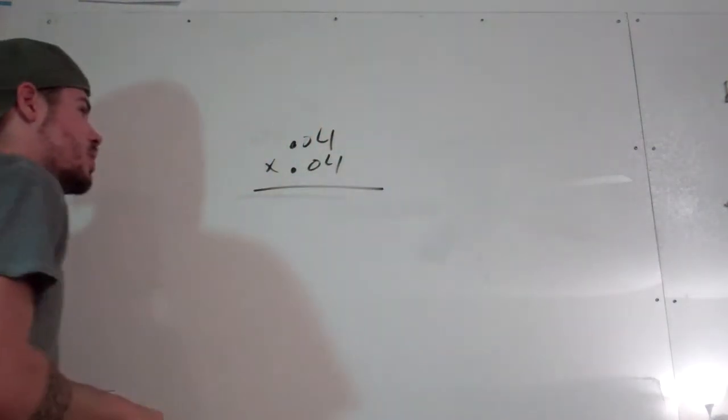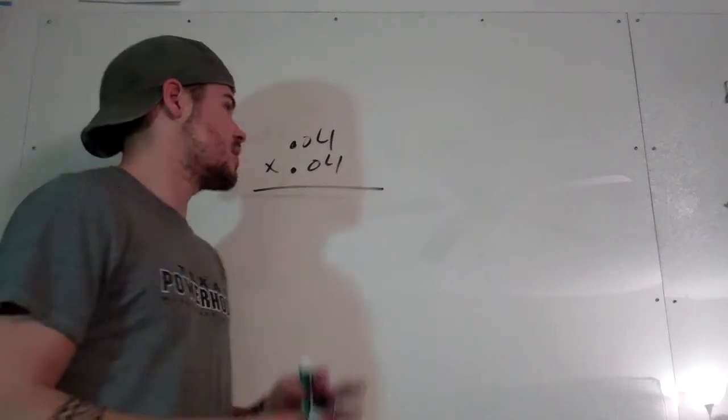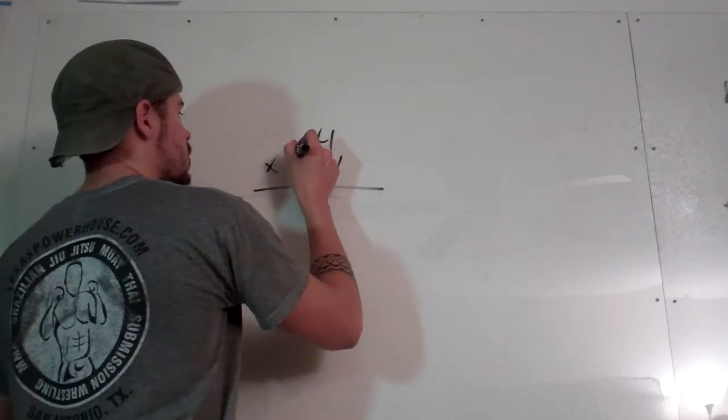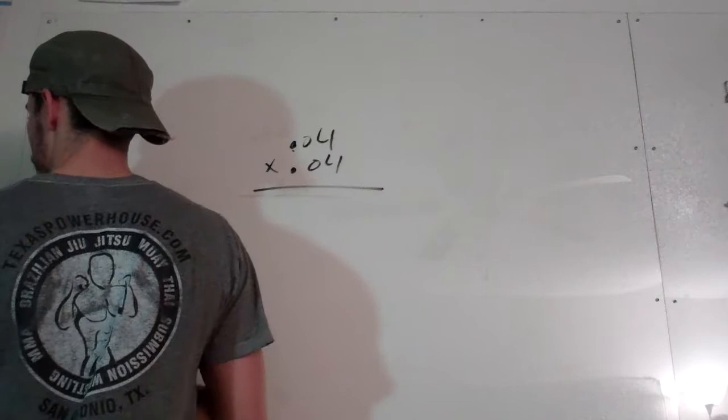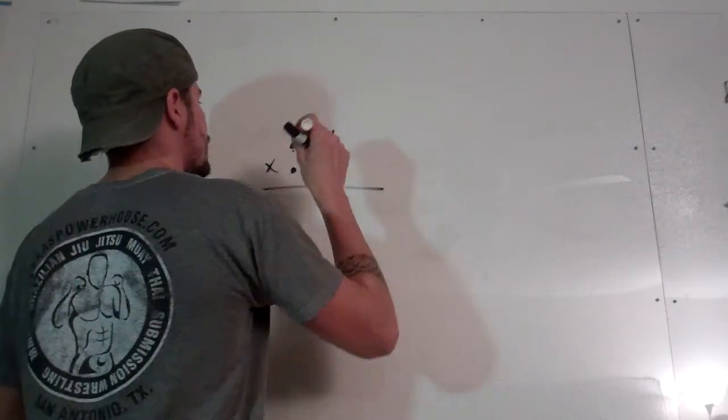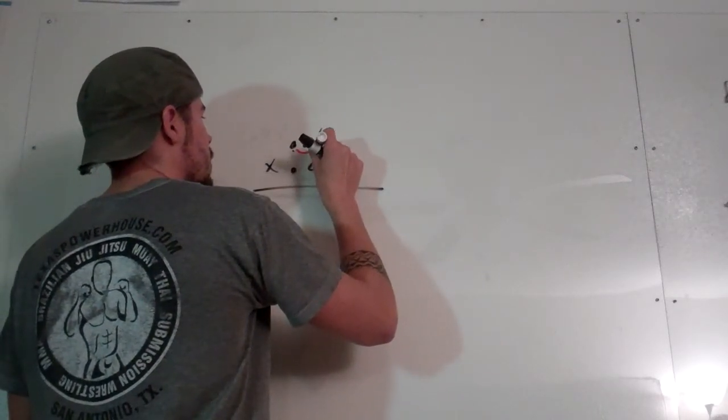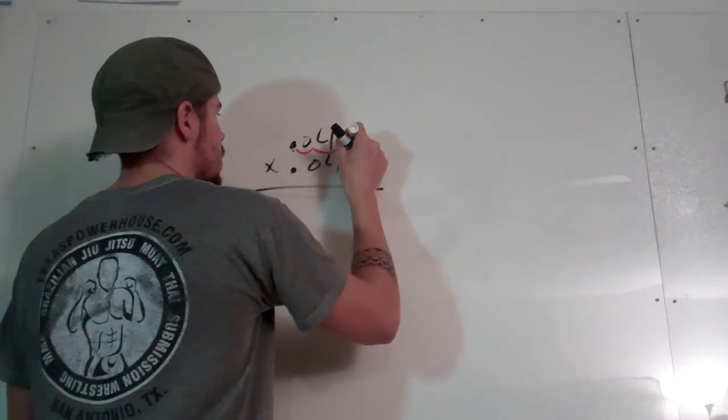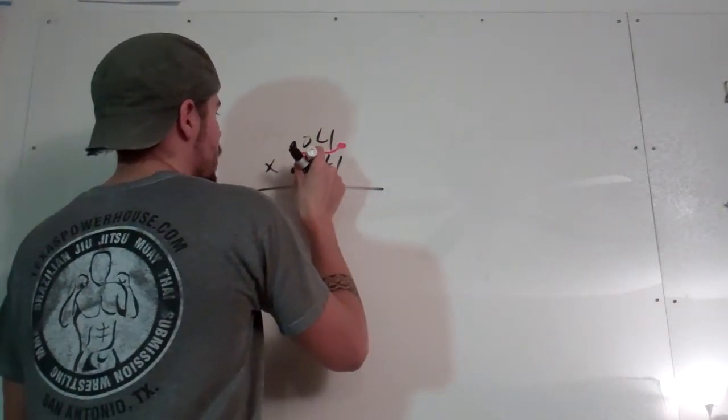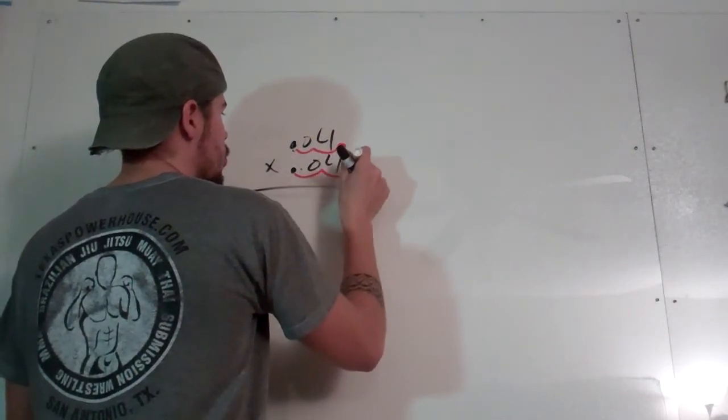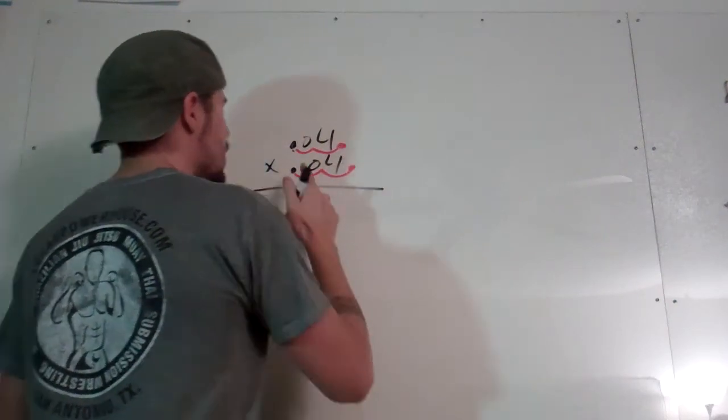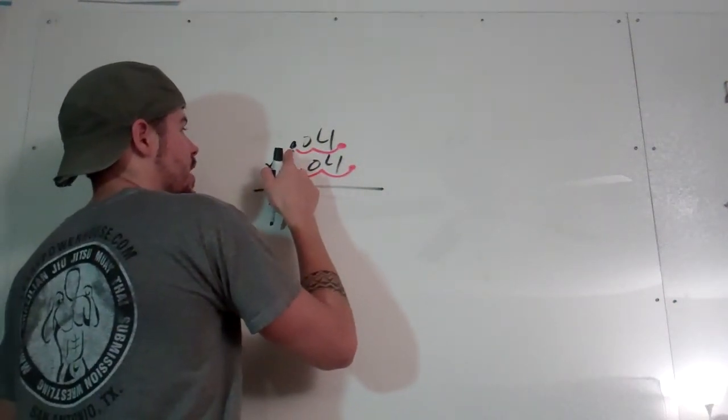Alright, so what's 0.04 times 0.04? Well, the first thing I want to do is take these decimal points here and move them over one, two places. So I want my decimal point to be right there, and one, two places. So how many times did I move my decimal over all together?